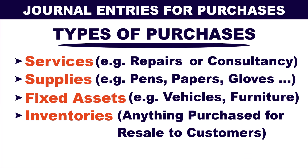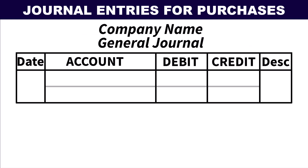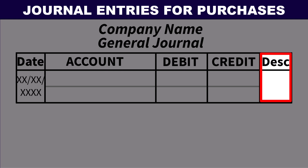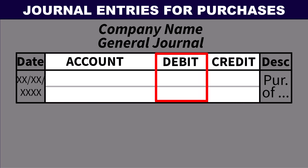Let's now see how journal entries are done for each of these types of purchases in the purchasing company's journal, and let's assume that the purchase price or cost is $6,000 in all examples. Here is a blank journal. The date is just the date of purchase and the description is whatever describes the purchase, like purchase of so and so items. But the account, debit and credit area is the main part of journal entries to be populated based on the nature of the transaction.